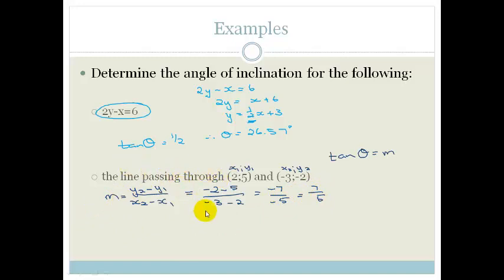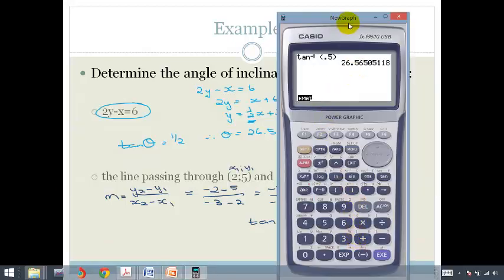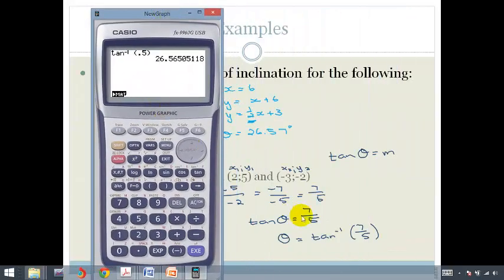And now we want the angle of inclination. So we go tan theta is 7 over 5. We need theta. So we're going to go tan negative 1 of 7 over 5. And we're going to pop out our calculator. And we can go shift tan bracket 7 divided by 5 bracket equals 54.46 degrees.